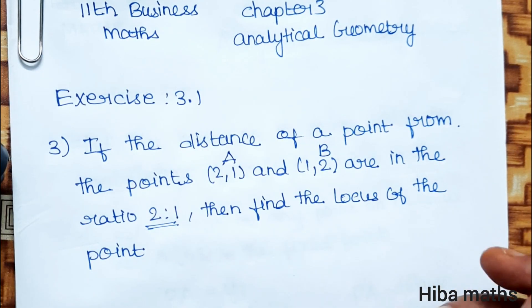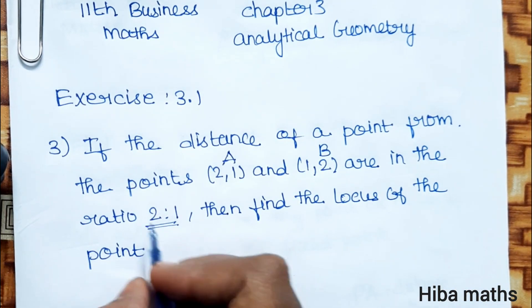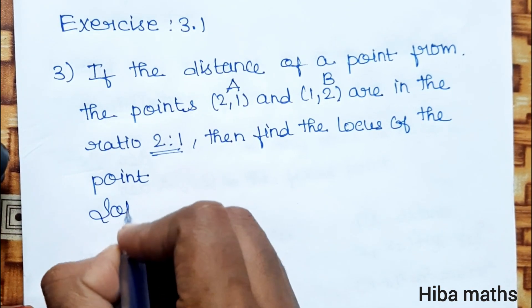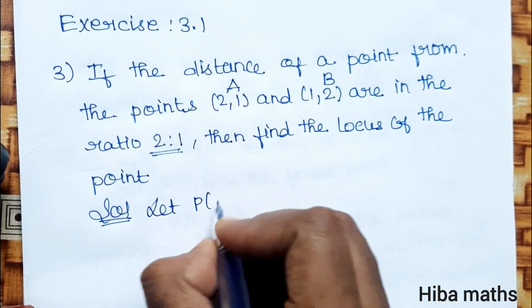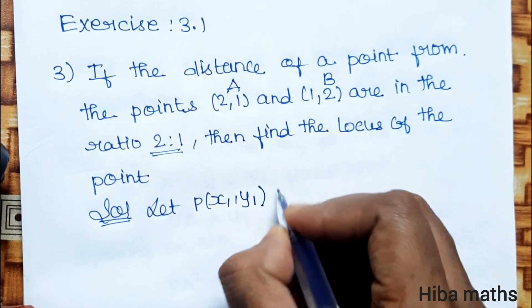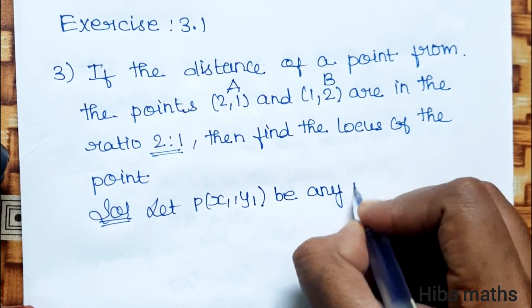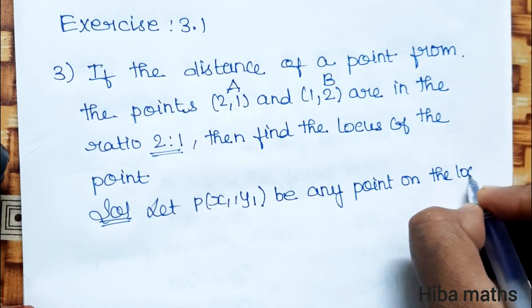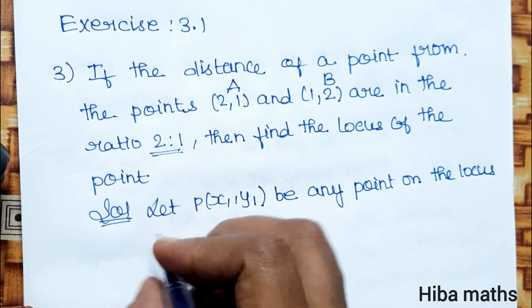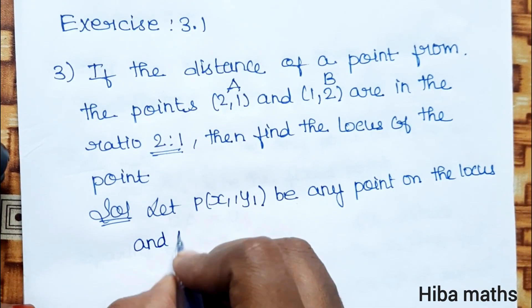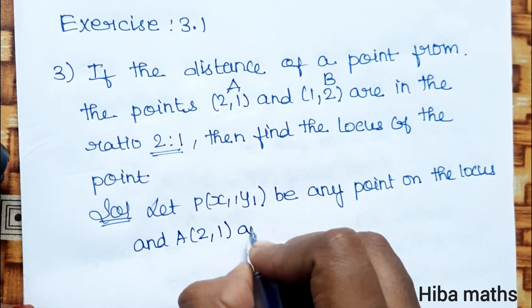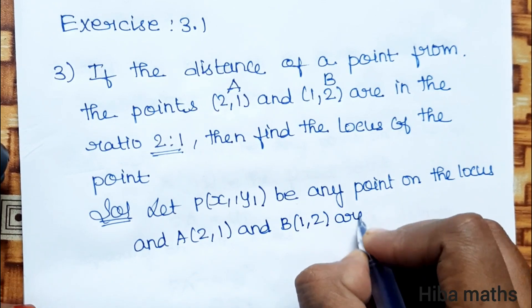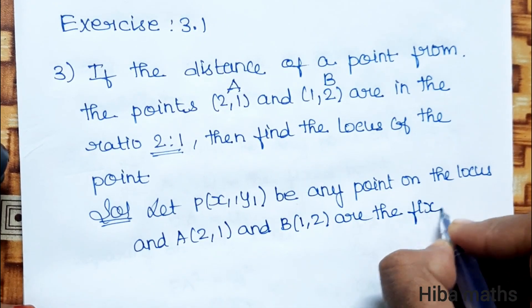In the solution, first statement: let P(x1, y1) be any point on the locus. A(2,1) and B(1,2) are the fixed points.